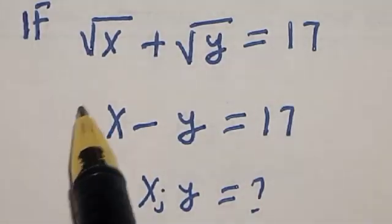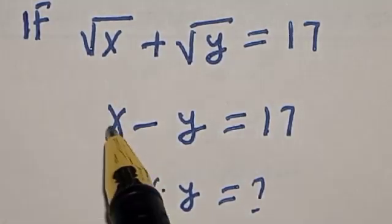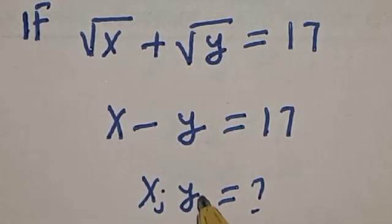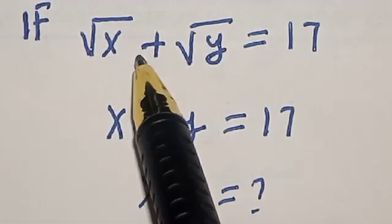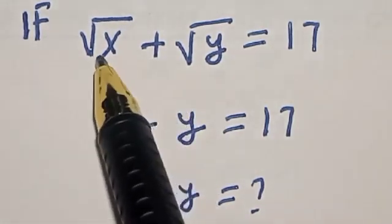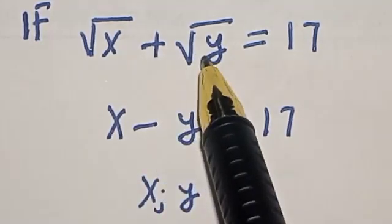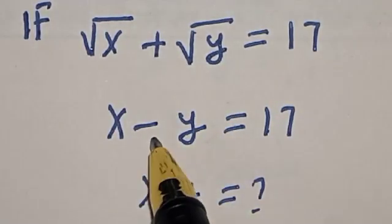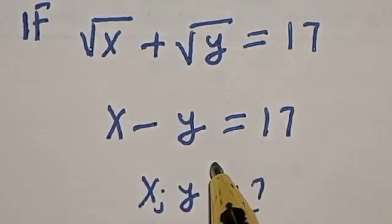Hello, welcome to Magist. In this class, we quickly want to find the value of x and the value of y from this given radical equation. Square root of x plus square root of y is equal to 17, and x minus y is equal to 17.